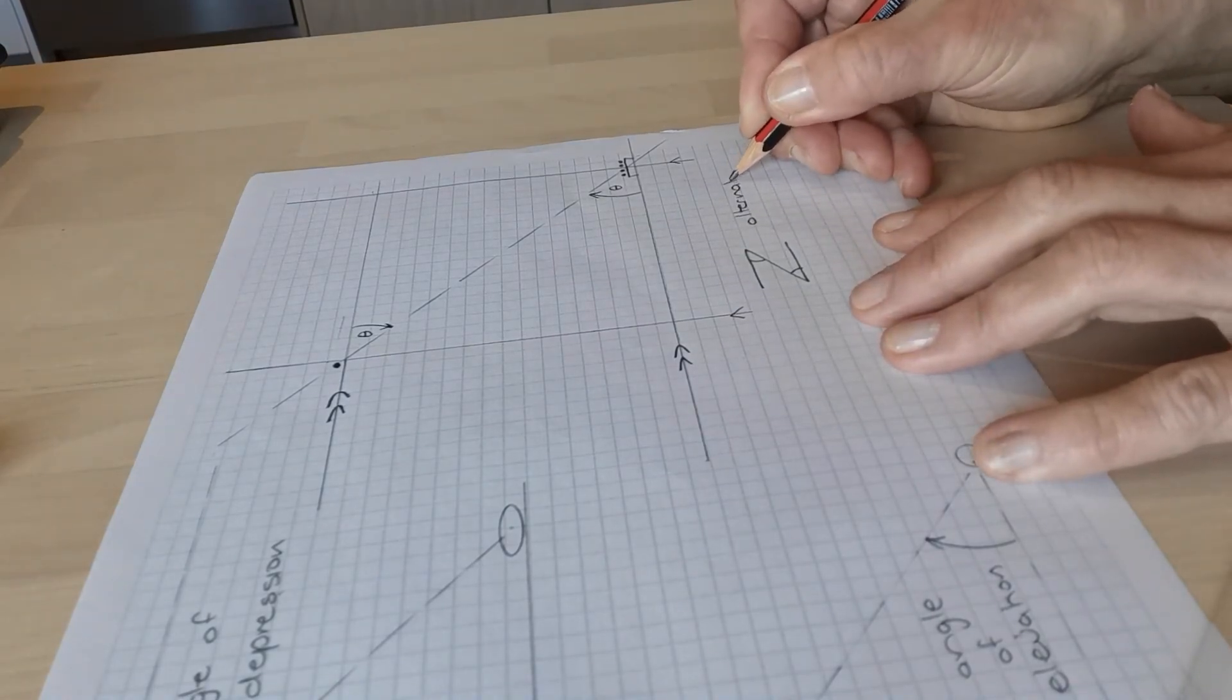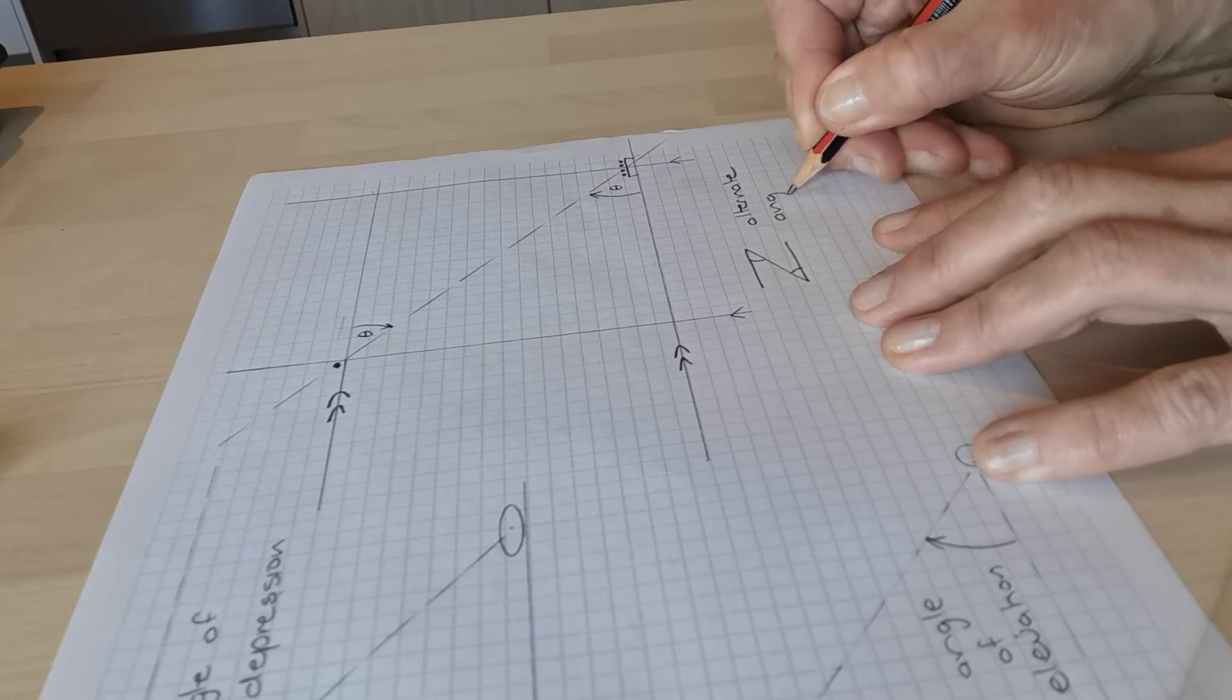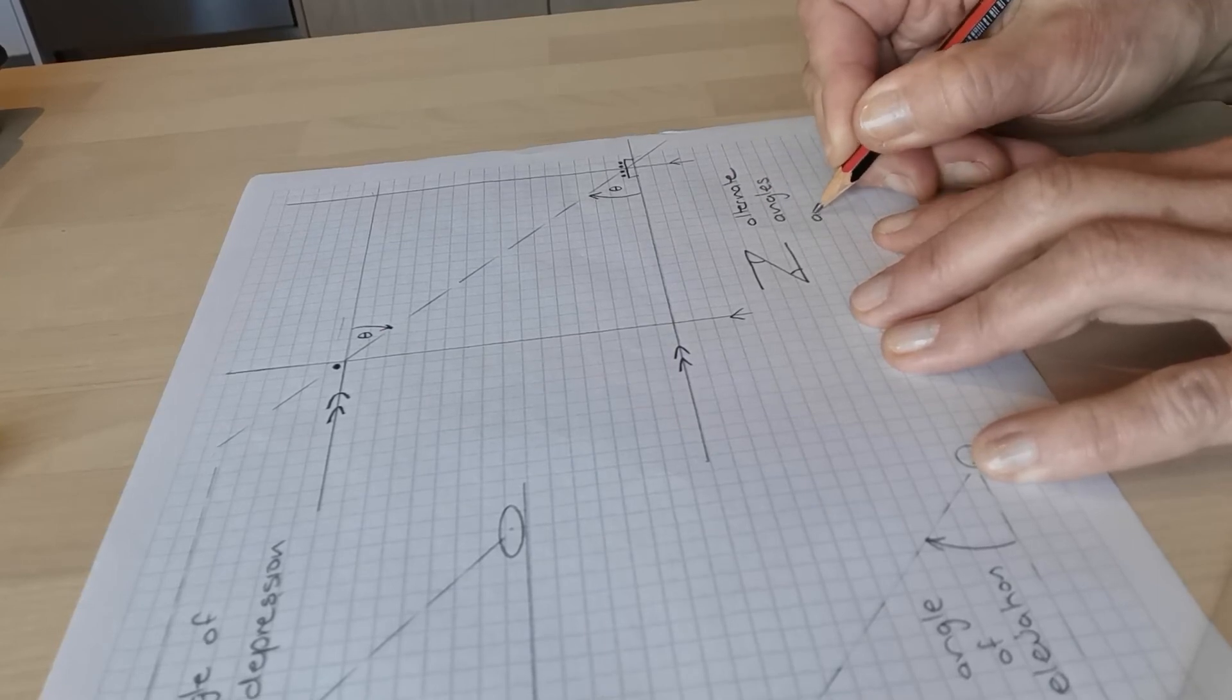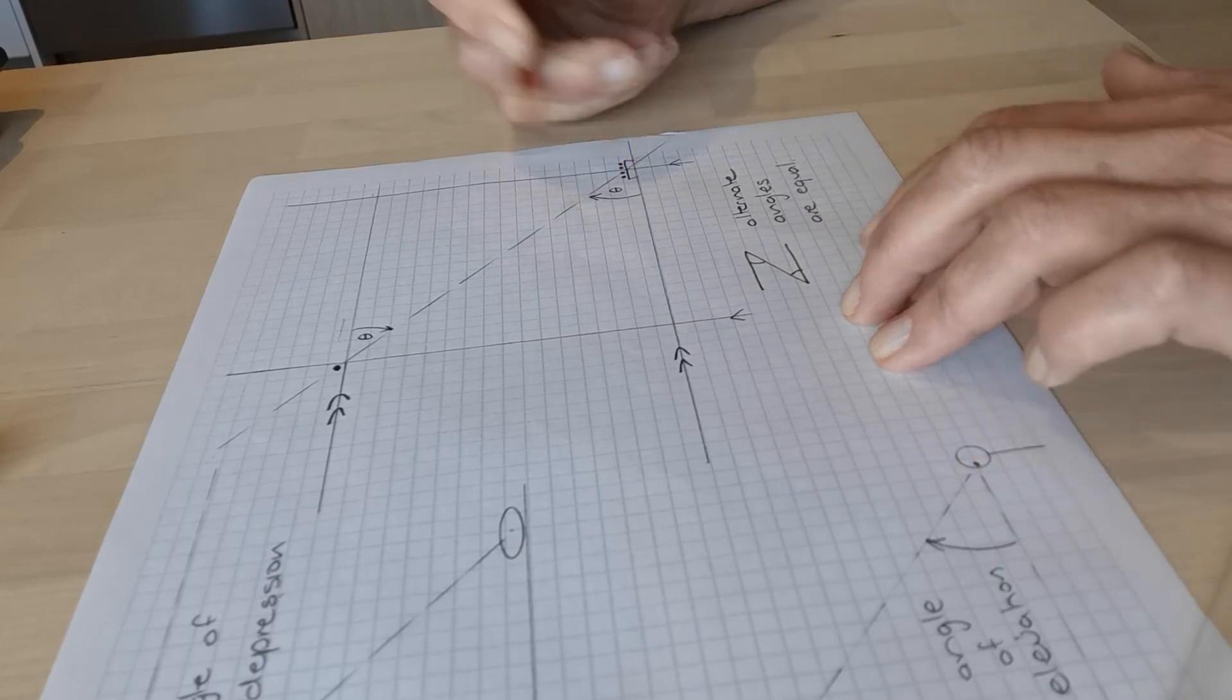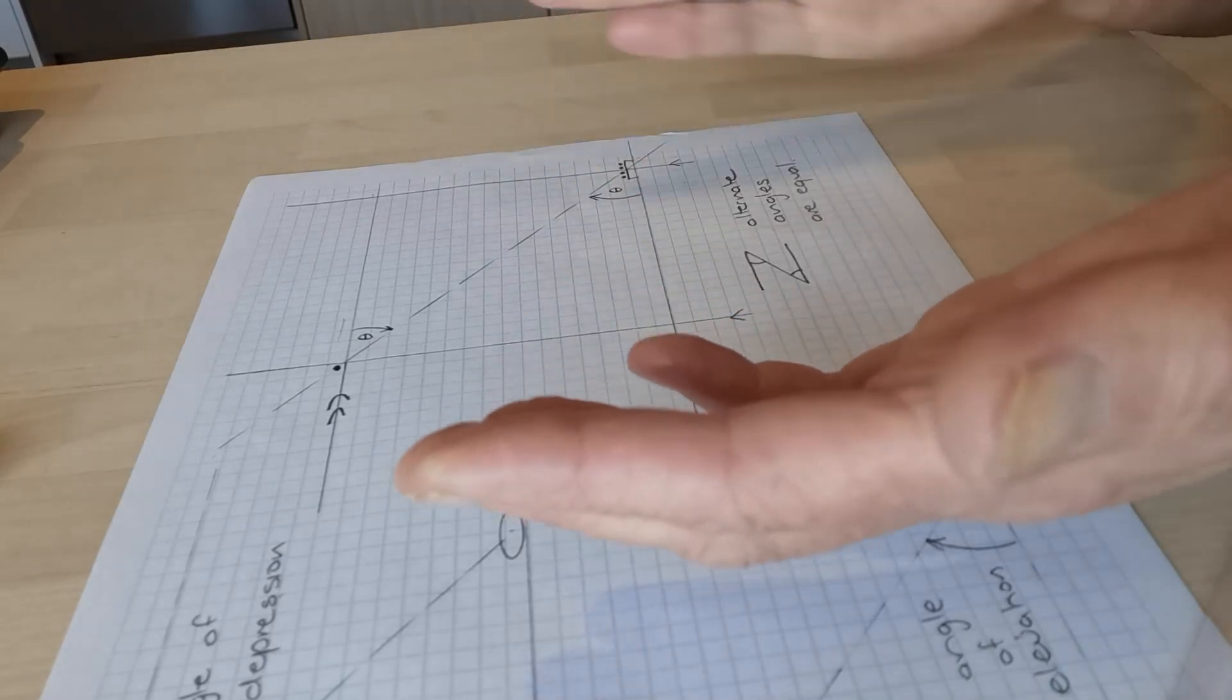So these are alternate angles and they are equal in size.